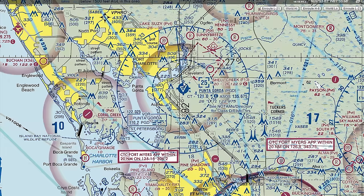The stars at Punta Gorda and Venice indicate a rotating beacon in service from sunset to sunrise — you'll see a white and green flash as you fly toward the airport, like a lighthouse but for airplanes. They also typically turn the beacon on during the daytime when weather is below VFR. So if you see it flashing at noon in bright daylight, it probably means the ceiling is very low or visibility is very poor.